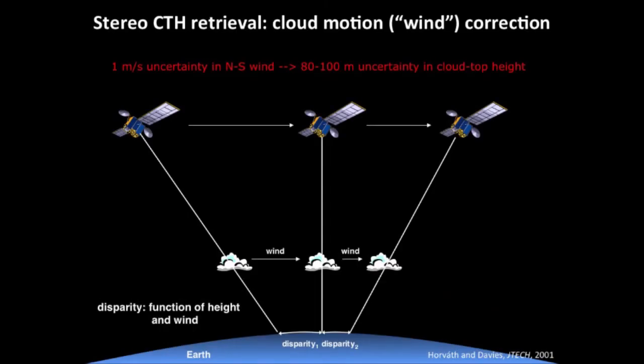The wind is also important if you want to create high-resolution cloud top height maps. Even if you just use two near-nadir cameras where the wind effect is smaller, if you don't account for the shift due to cloud motion wind, a few meters-per-second wind will bias your heights either positively or negatively by about a hundred meters depending on wind speed.